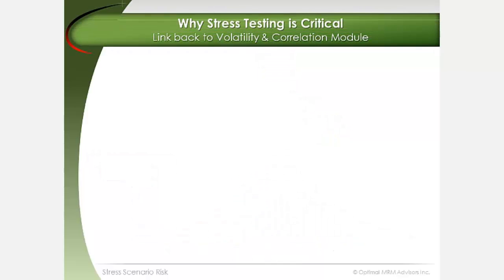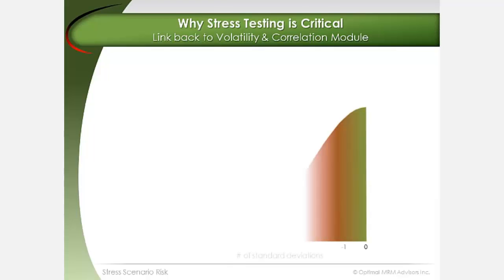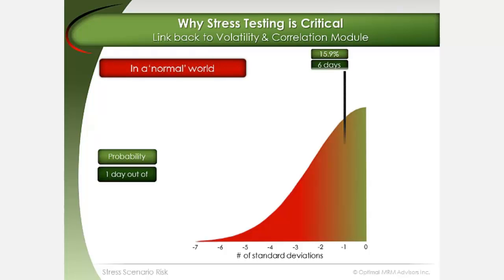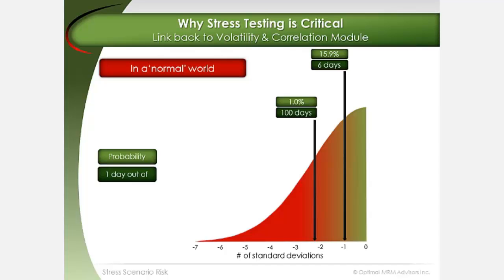A given risk factor's move expressed in standard deviation terms under normal distribution assumptions can be shown as a more practical probability expression. In the normal world, a one standard deviation change in a given risk factor has approximately a 16% chance of occurring on any given day. A 2.33 standard deviation change — the general benchmark used to measure 99% VAR — has a 1% probability, or is expected to occur on average once every 100 days.